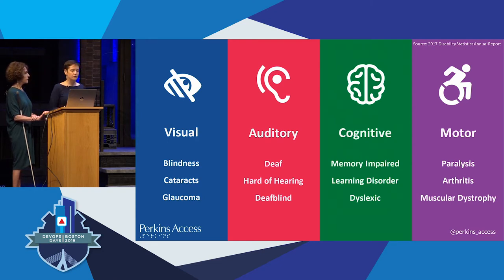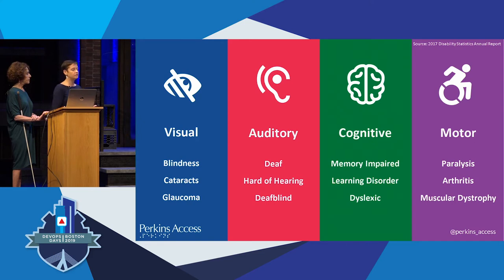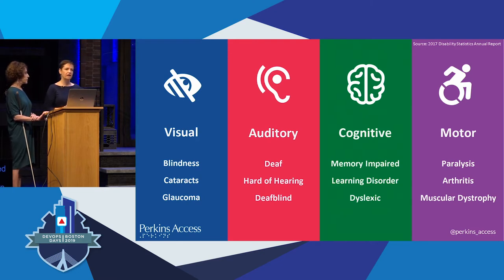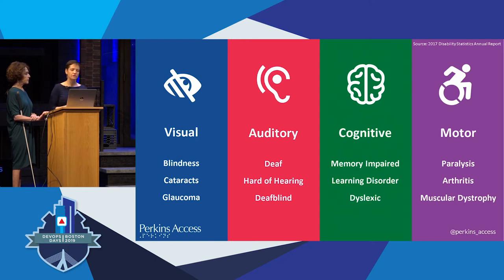Cognitive impairments also include people with memory impairments. And then motor disabilities — that could be paralysis, partial paralysis, limited use of your hands, arthritis or chronic pain, muscular dystrophy. All these people use different strategies to access digital technology. Blindness — typically people use screen readers, which is what Joanne is going to demonstrate. People also rely on keyboards and switch controls, so there's a variety of assistive technologies out there that empower these people to access digital content.